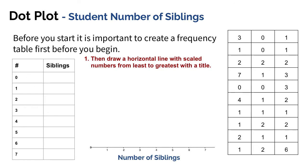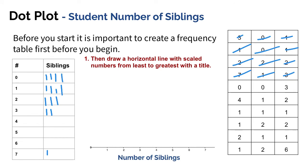Then all I'm going to do is start to make some tallies for how many siblings everybody has. I'm going to start with three and put a tally, then zero and put a tally, then one and make a tally, and I'm just going to continue until I get through the rest of my data, going row by row and tallying how many numbers I have for each of these numbers of siblings.